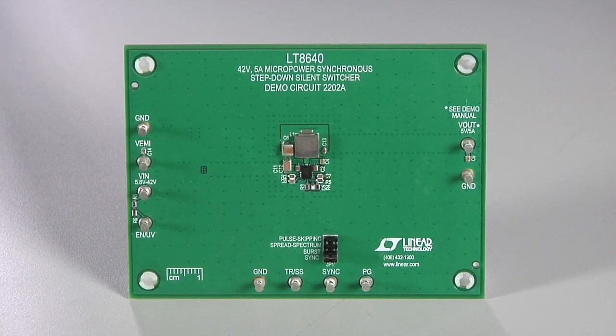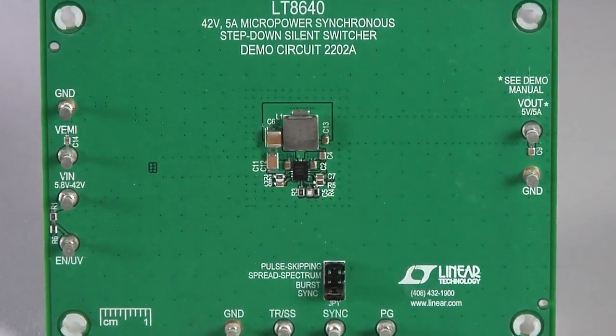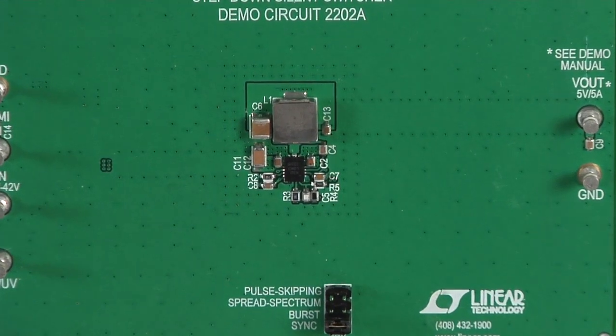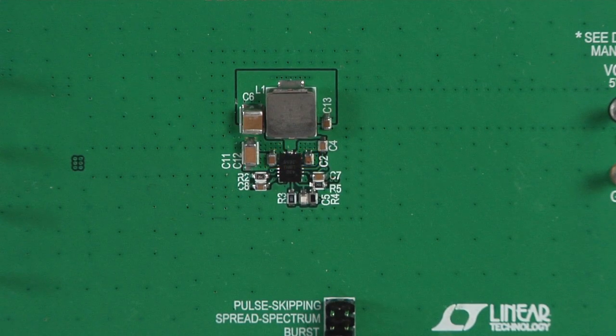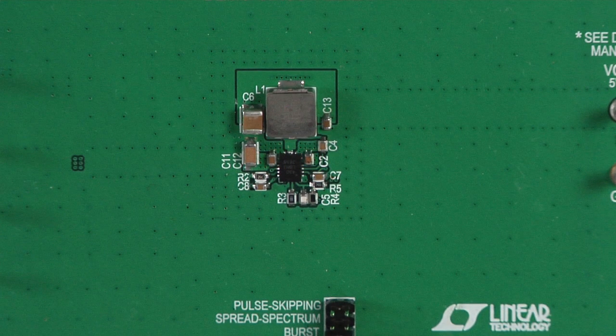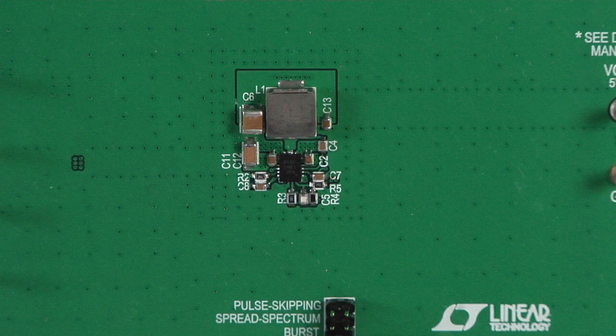Here we see the recommended PCB layout on our demo board. For optimal performance, the LT8640 requires the use of multiple VIN bypass capacitors. Two small capacitors should be placed very close to the LT8640, one on each side. These two capacitors use a small case size such as an 0603 to minimize the parasitic inductance. A third capacitor of larger value should also be added.